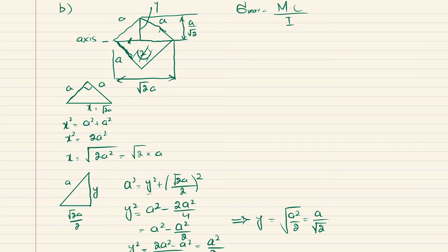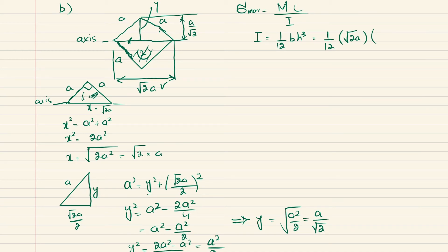For the moment of inertia of one triangle about the neutral axis, the formula is I = (1/12)·base·height³. The base is √2·a and the height is a/√2. Substituting and simplifying gives I₁ = a⁴ / 24 for one triangle.